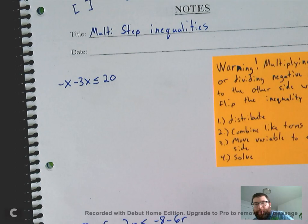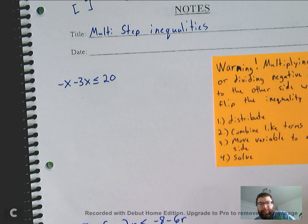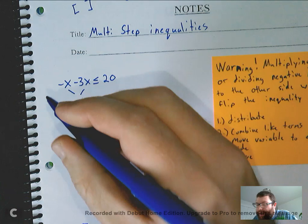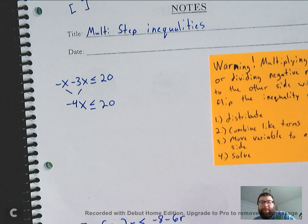Let's do a couple of examples. I won't spend too long on this because, again, this is a review. You guys did pretty well on this this year, too. But looking at this first problem I have here, there is nothing to distribute. I do have like terms, though, right here. Negative x and negative 3x can combine to become negative 4x, and that's less than or equal to 20.